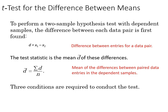So to perform a two-sample hypothesis test with dependent samples, we need to first find the difference between each data pair that is going to be represented by d, which is x1 minus x2, and then we'll find our test statistic which is the mean difference, or d bar, of those dependent differences. So the mean is simply the sum of the differences over the sample size represented by this equation, and if those conditions are met we can conduct our test.